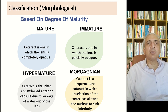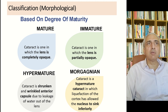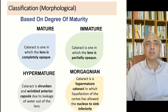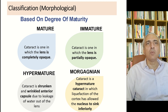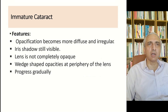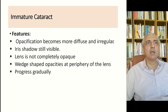Classification based on degree of maturity: a mature cataract has a completely opaque lens; an immature cataract has a partially opaque lens. A hypermature cataract has a shrunken and wrinkled anterior capsule due to leakage of water out of the lens. A Morgagnian cataract is a hypermature cataract in which liquefaction of the cortex has allowed the nucleus to sink inferiorly.